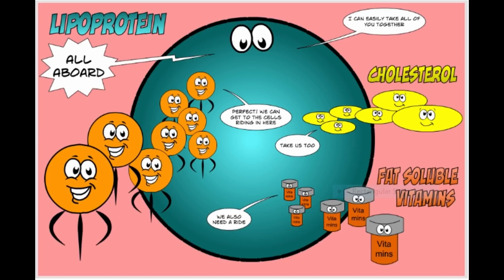LDL particles are not only carrying cholesterol around the body — they're primarily used as an energy transport system for triglycerides. It's common in low-carb communities to think of ketones as the primary fuel on a high-fat diet, but this is not true. Triglycerides are still the number one fuel source when running on fat-based fuel. So when many people see their LDL go up on a low-carb high-fat diet, it's because their fat-based energy demands increase, requiring more LDL to transport more triglycerides.